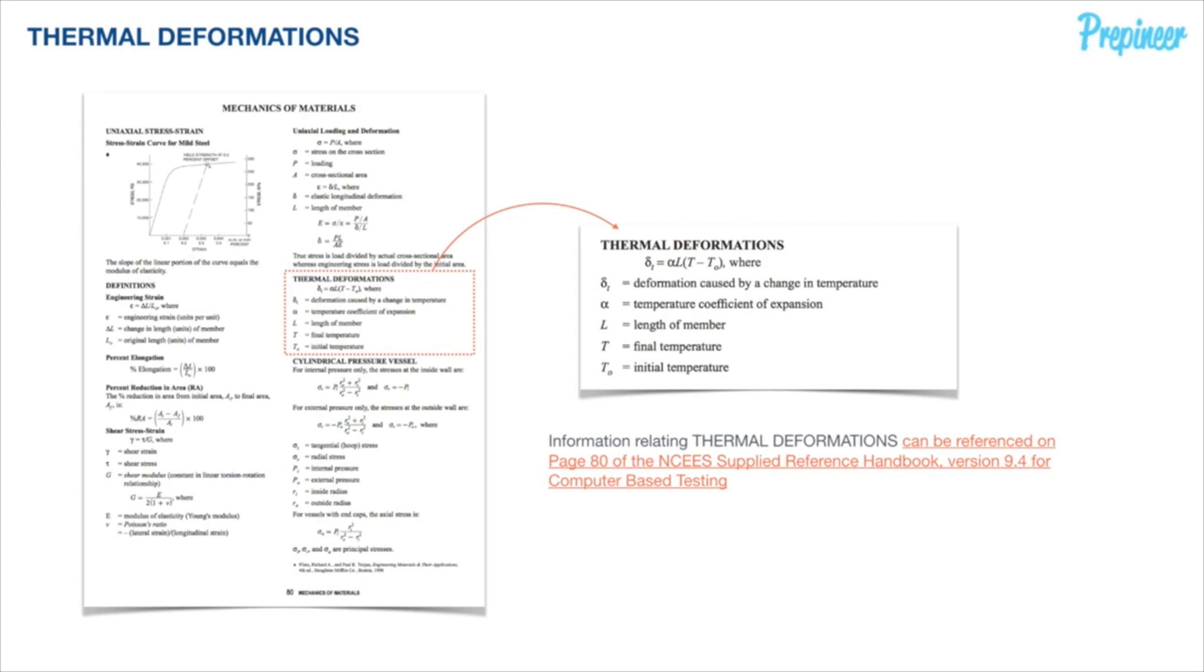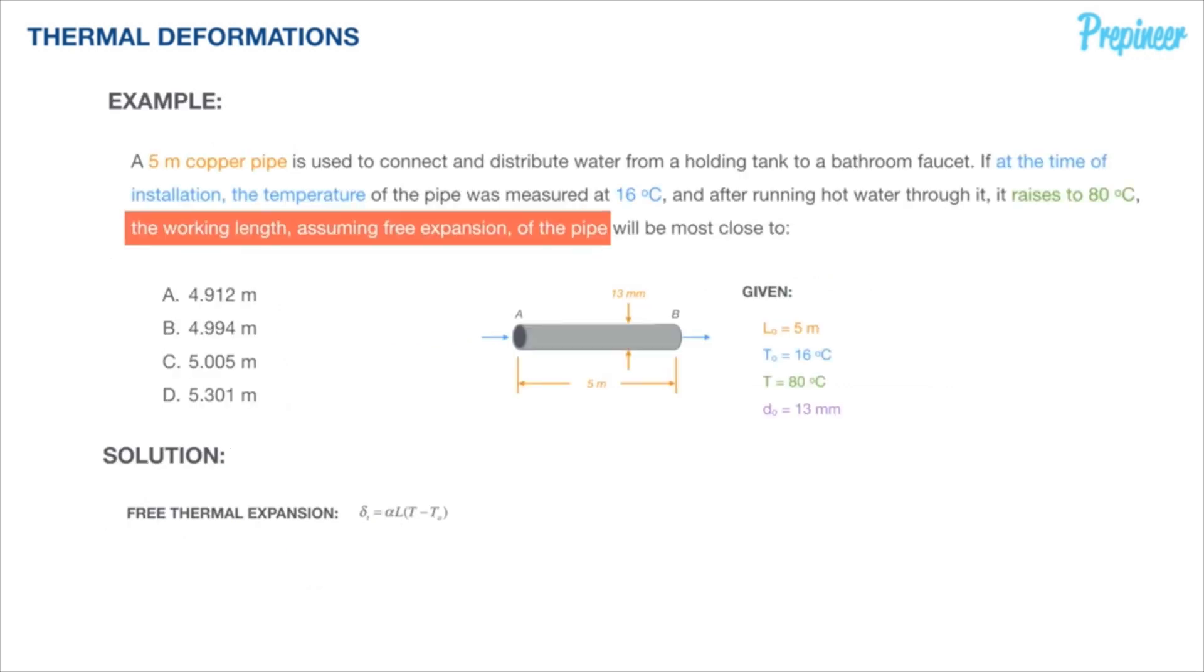Let's take this general formula back to our problem statement. I noted this as the free thermal expansion or free thermal deformation formula. Our problem statement is telling us to assume free expansion, so the pipe is going to be free to expand or go through free thermal expansion. Let's get to determining the working length of this pipe.